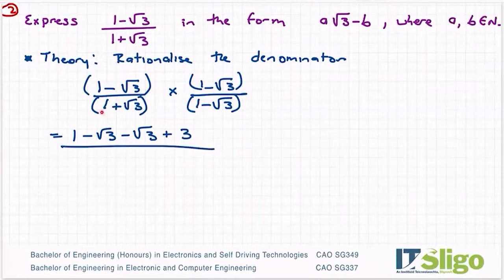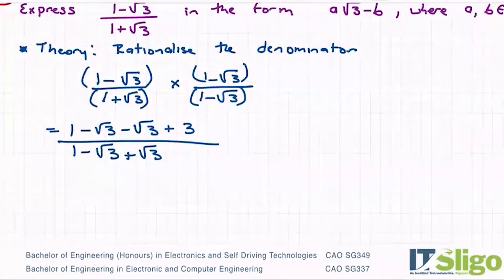And on the bottom, one by one is again one, one by minus root three is minus root three, plus root three by one is plus root three. And plus root three by minus root three is minus root nine again, or minus three.